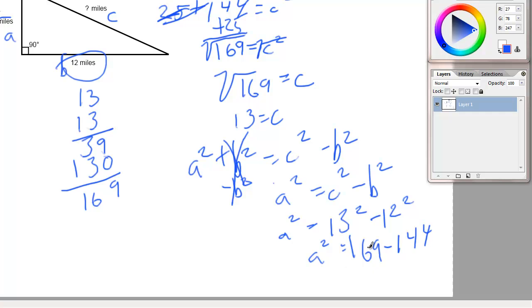Now you just subtract 144 from 169, which is 25, so a squared equals 25. Now, to get rid of the square again, you take the square root. So, a equals the square root of 25.